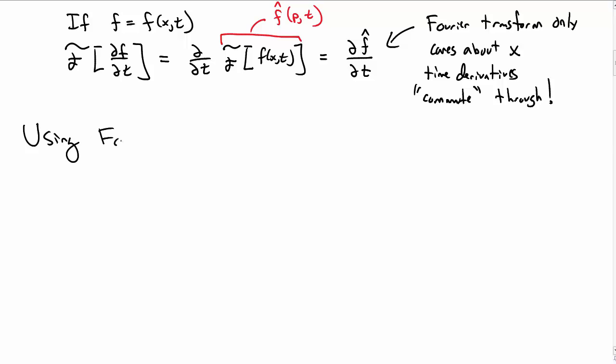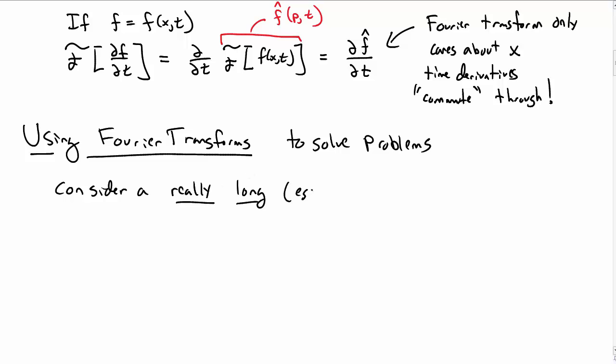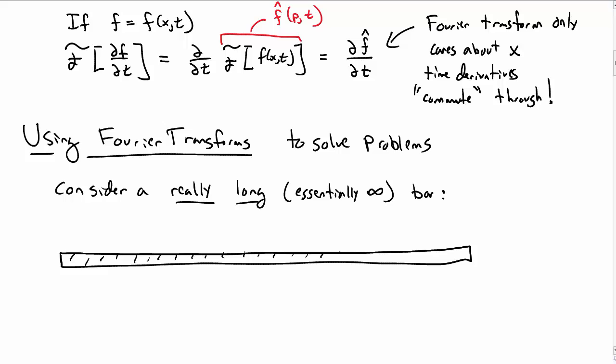So now let's look into using the Fourier transform to solve problems. For an example, consider a really long bar, a bar that is essentially infinitely long. So it's hard to draw an infinite bar, but let's just draw a really long bar here. And you can imagine it just keeps going out to either side. Let me just label x equal to zero, for instance, somewhere in the middle here.